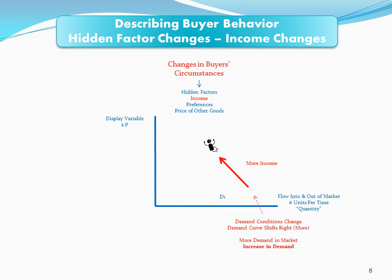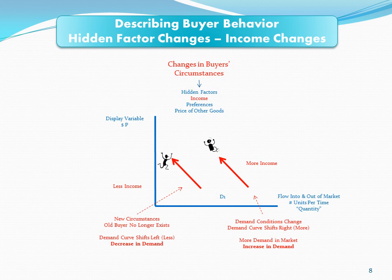But as your income goes up, the old behavior pattern no longer exists — that consumer no longer exists. In any given diagram, we really only have one curve, though we leave the original on the paper to see where we were. Now, suppose I took income away from you — you had less income and you just don't have the income to spend, so you cut back on things. Your demand shifts to the left — that's less demand. The demand curve shifts to the left, and we say in economics that's a decrease in demand.